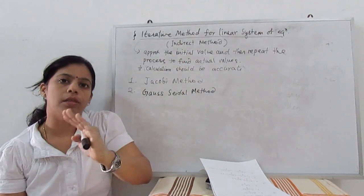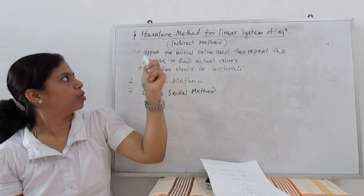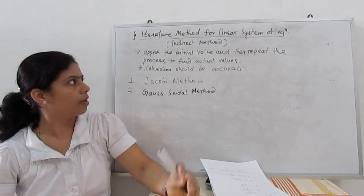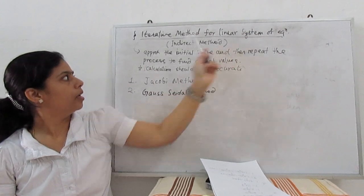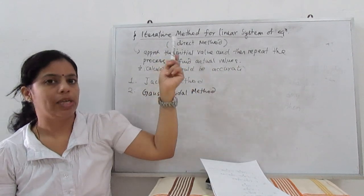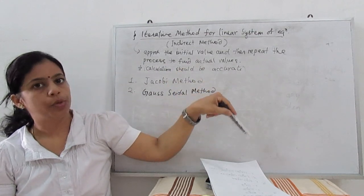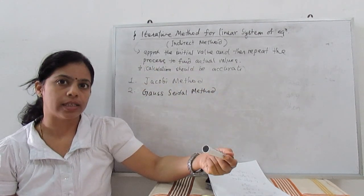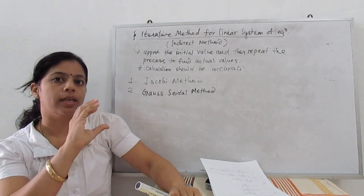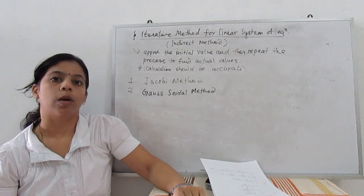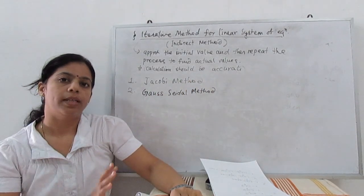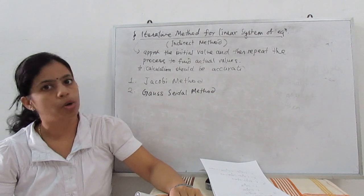Iteration means we have to repeat the process by taking some initial values. First, we consider some approximate initial values, substitute them, then use whatever new values we get as the next initial values and repeat the process. One important note: your calculations should be accurate at every step — if you miss something, your whole solution will be spoiled.